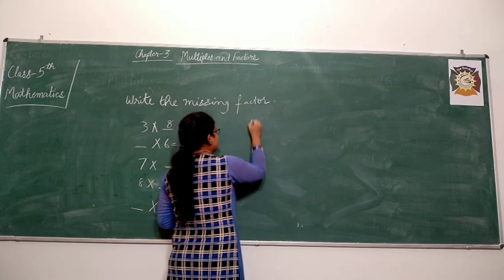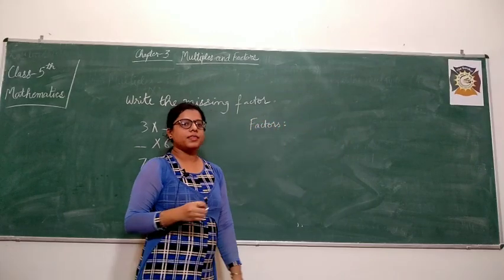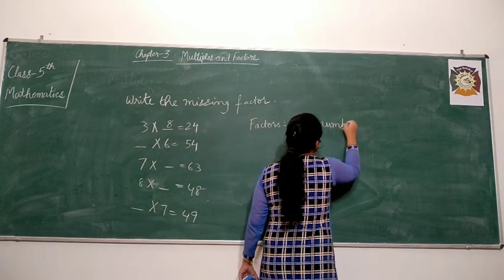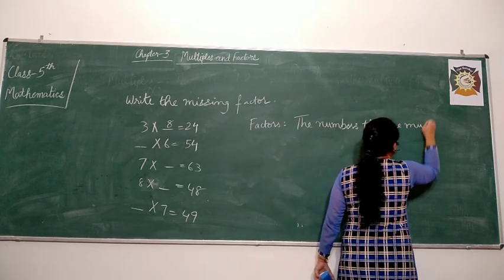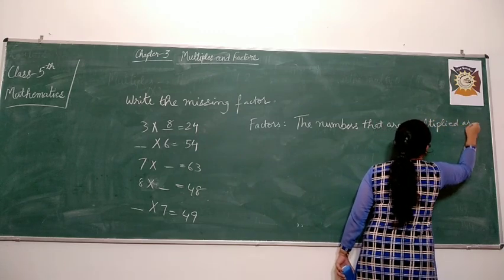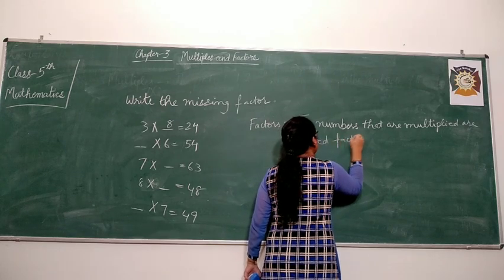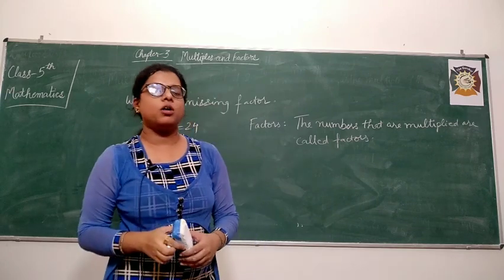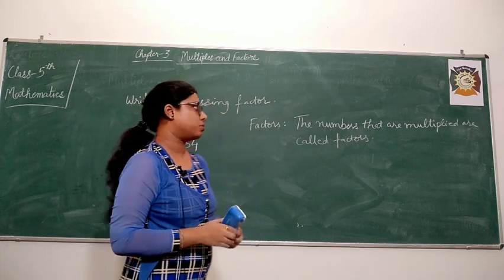Let us define factors now. The numbers that are multiplied together are called factors. Before that, let me give you some properties of multiples.